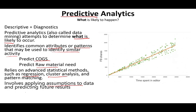For example, this graph shows time spent in the editor versus Facebook shares — the more time you spend in the editor before publishing an article, the more it gets shared. Notice the positive relationship. So the prescription is: spend more time in the editor and your posts will be shared more. This is a fictitious example to bring the point home.